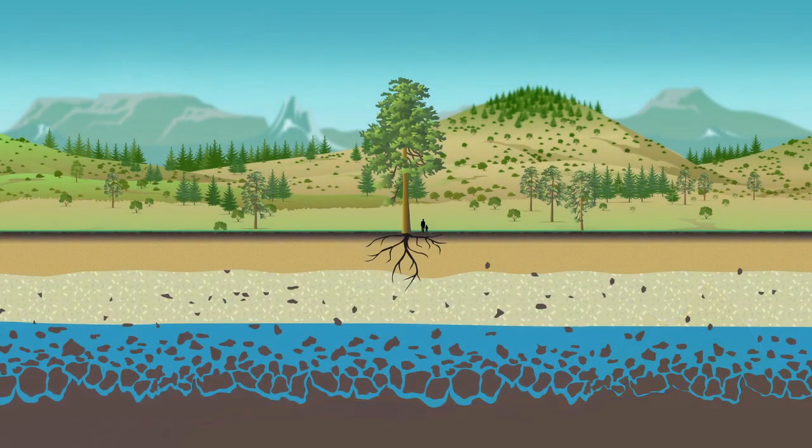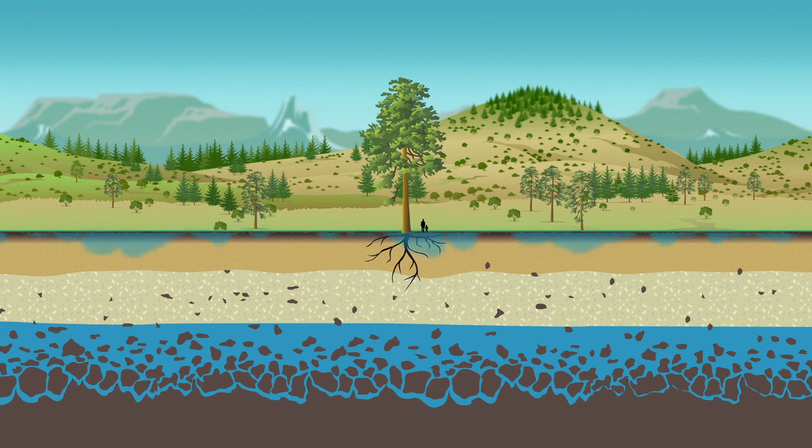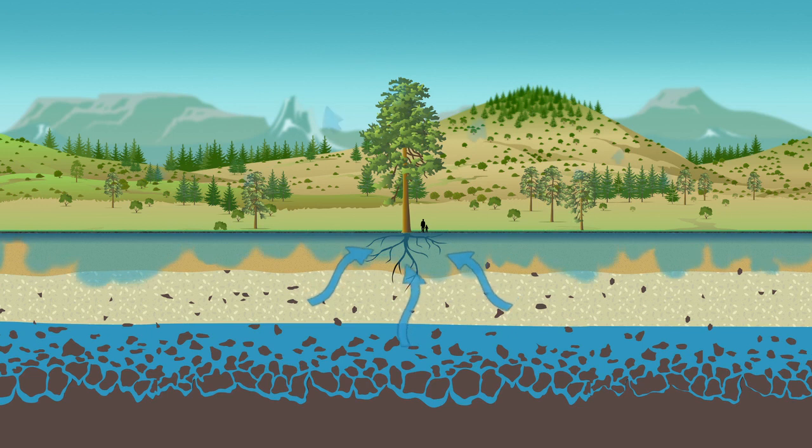Some of the water that falls as rain or melts from snow soaks into the ground, into the soil. Plants pull water from the soil to live and grow. Most of the water they pull from the soil is then released into the air, a process called evapotranspiration.